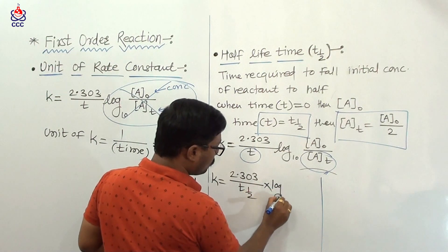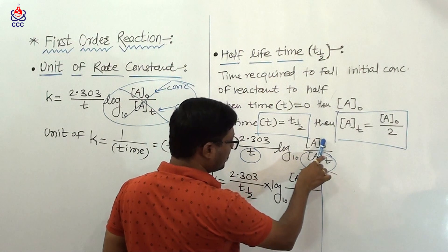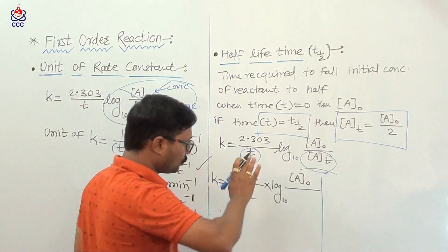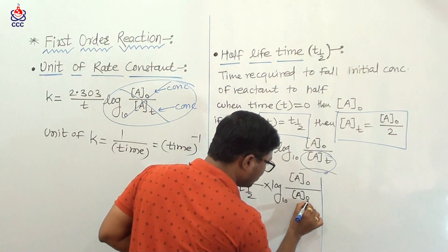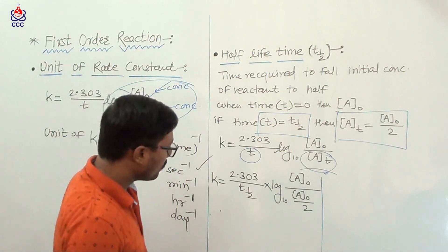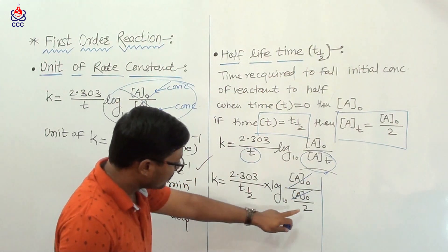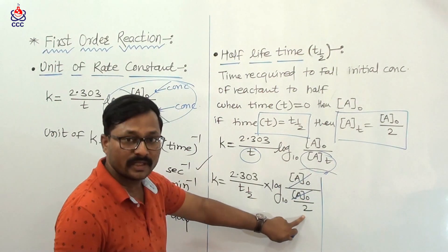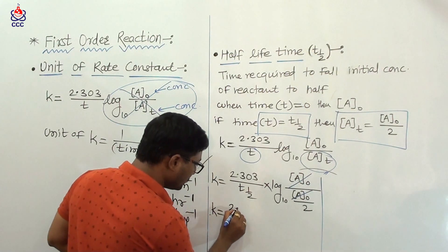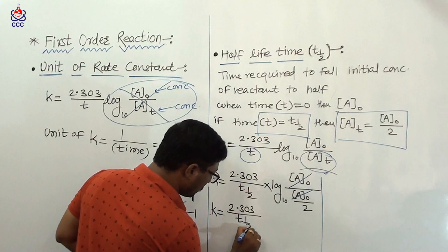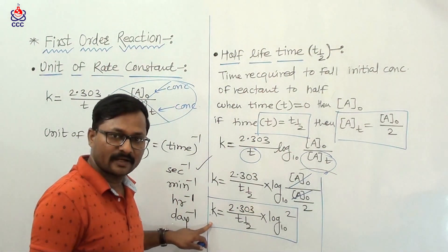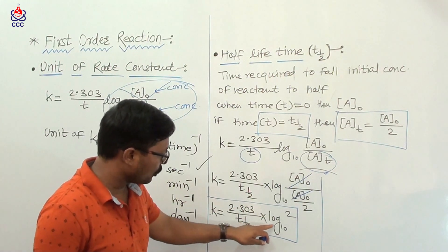So when time t is equal to t half, At is equal to A0 upon 2. Substituting, we get log to the base 10 of A0 upon (A0/2), which simplifies to log to the base 10 of 2. The A0 terms cancel. Therefore, rate constant k is equal to 2.303 upon t one-half, multiplied by log of 2 to the base 10.